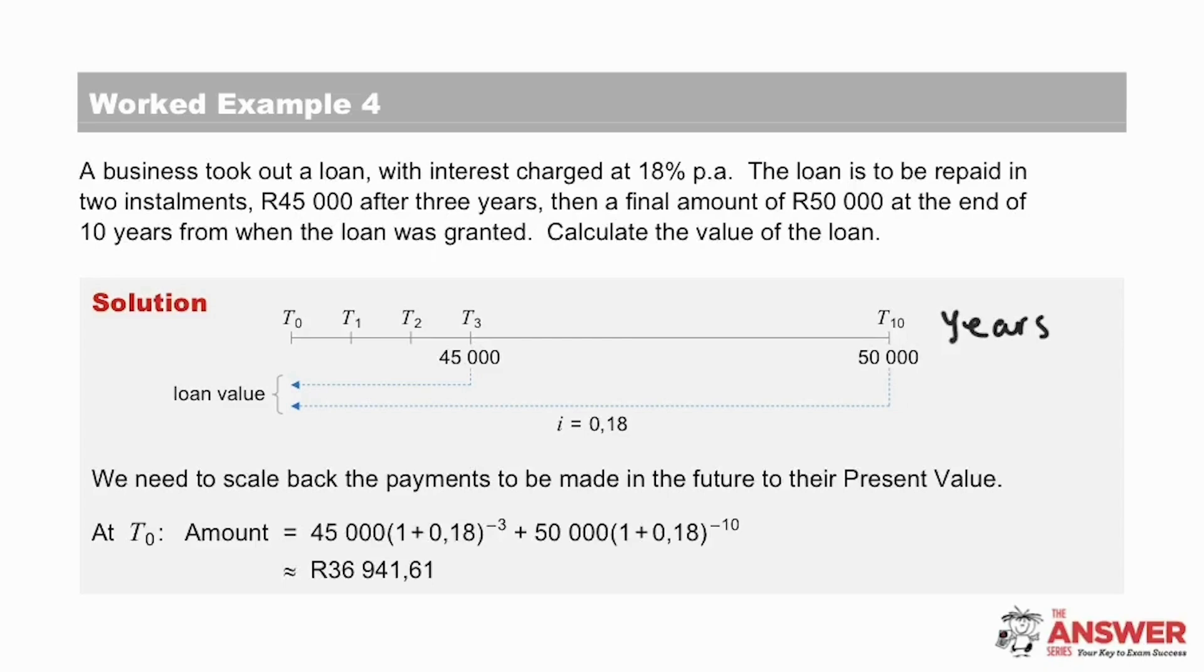We have been asked to calculate the value of the loan, which is the value at T0. The loan amount is going to be determined by taking the 45,000 and scaling it back to T0, as well as the 50,000, scaling it back to T0 as well. So we take the compounding factor to the negative 3 on the 45,000 for those three years. And then for the other repayment 50,000, we take the compounding factor to the negative 10 to calculate the value at T0. This is then our answer for the value of the loan.